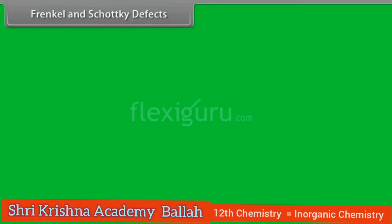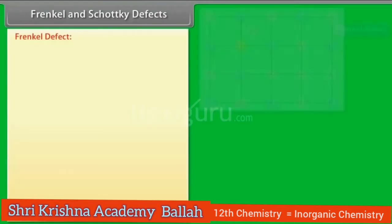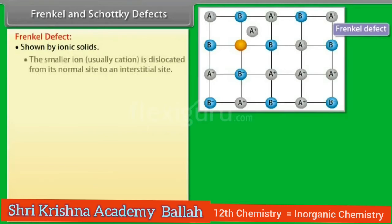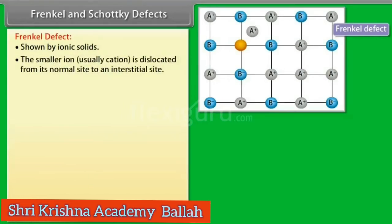Frenkel and Schottky Defects. Frenkel Defect is shown by ionic solids. The smaller ion, usually a cation, is dislocated from its normal site to an interstitial site. It is also called Dislocation Defect.